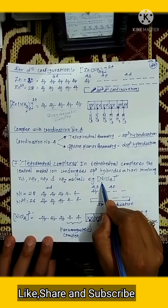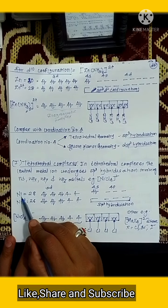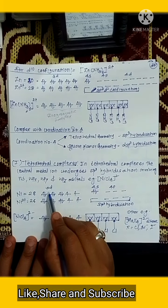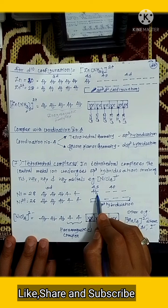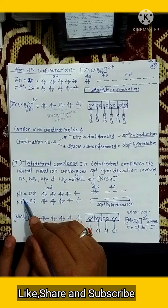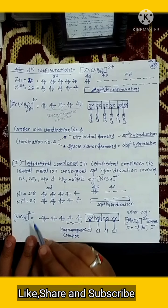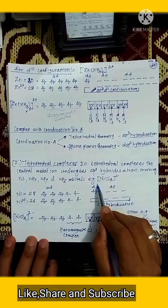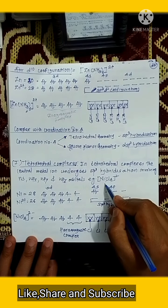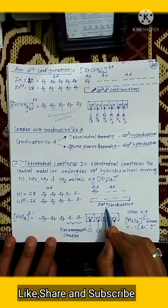The best example is NiCl4 2-. The atomic number of nickel is 28, so its electronic configuration is written as 3d8 4s2. In this complex, Ni is present in the 2+ oxidation state, so the electronic configuration of Ni2+ is written as 3d8 4s0. Since the ligand is a halide, it is a weak ligand, and that is why the hybridization is sp3.